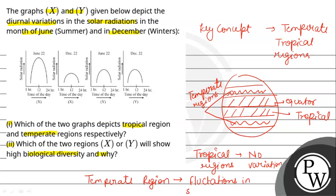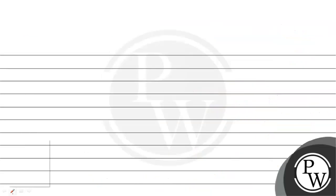On the basis of this data we can easily predict that graph X has higher solar radiation in the summer and low solar radiation in the winters. Obviously this will be our temperate region. In Y graph you can see almost equal, there is no contrast, there is no variation.